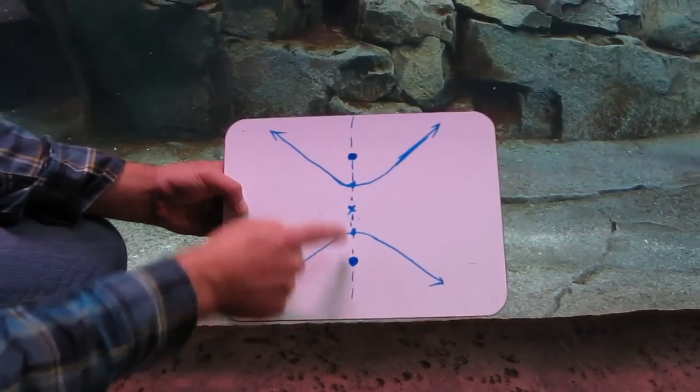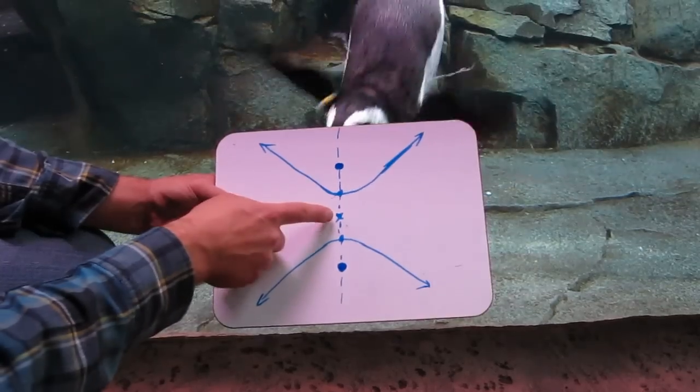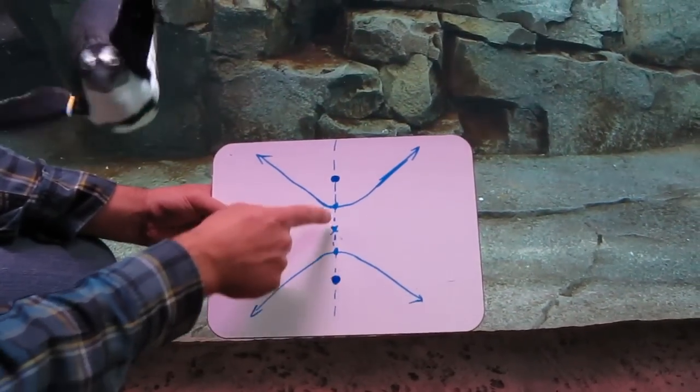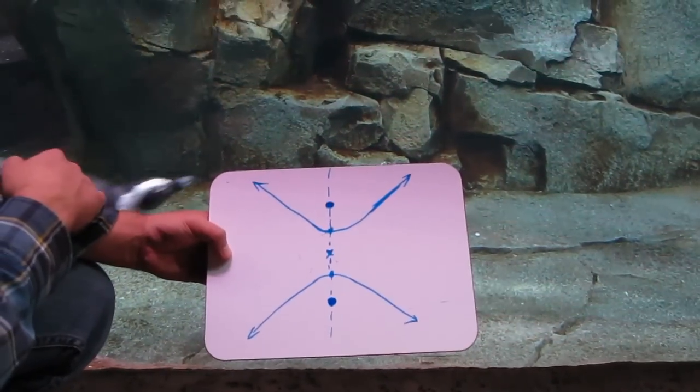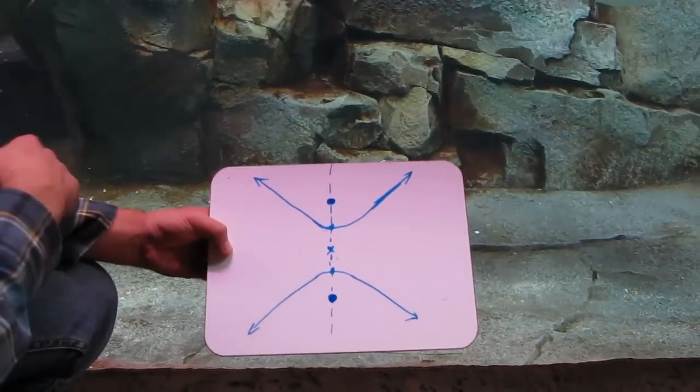These are called the foci, or individually, the focus. This is the center, and finally, these are the vertices. Now, when you're looking at parts, they're very similar to parabolas that reflect.